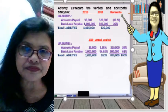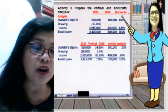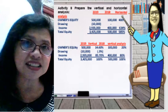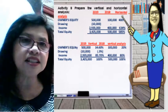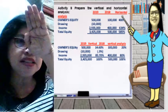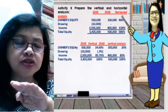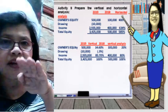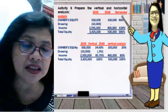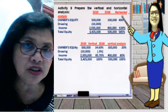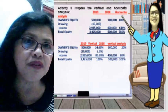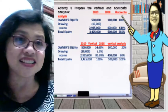Now let's go to the owner's equity account. For horizontal analysis, we get the change — increase or decrease — in each account comparing current to previous year. In this case, 500,000 minus 100,000 divided by 100,000 gives a 400% increase.